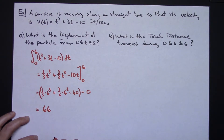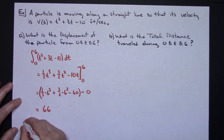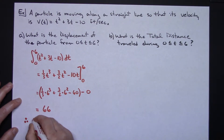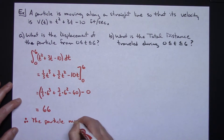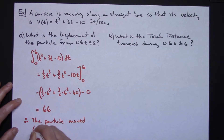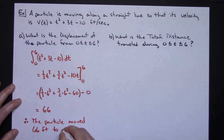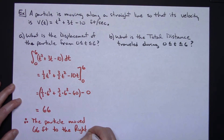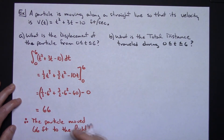That gives us 66. It is a positive number, so I can conclude the particle moved 66 feet to the right, because it said it's moving along a straight line. A positive 66 means it moved to the right; if it were negative 66 it would have moved to the left.